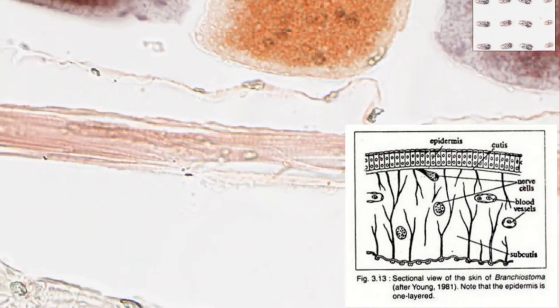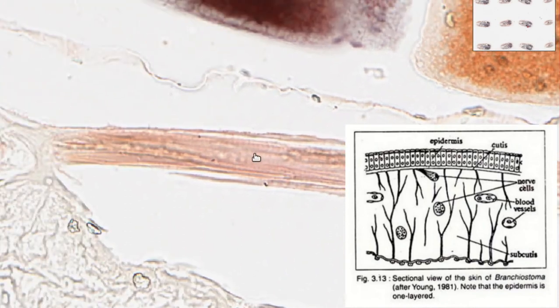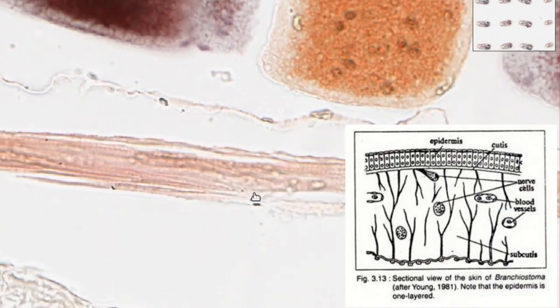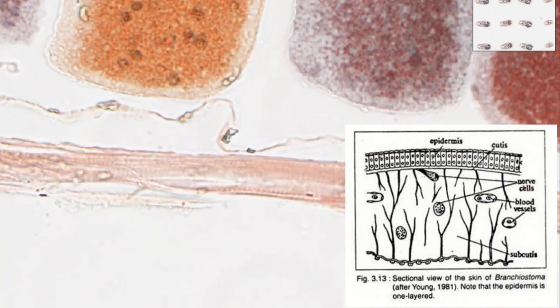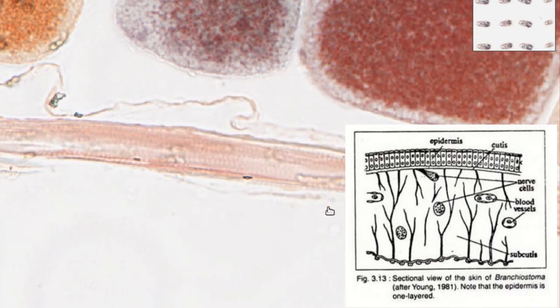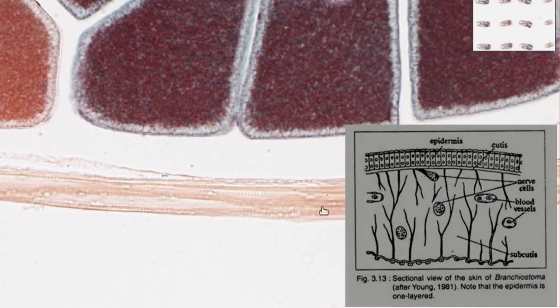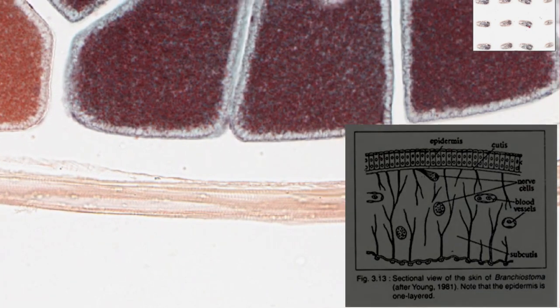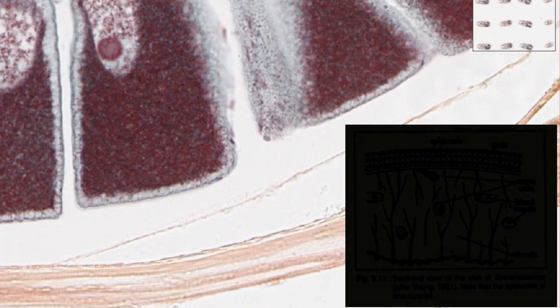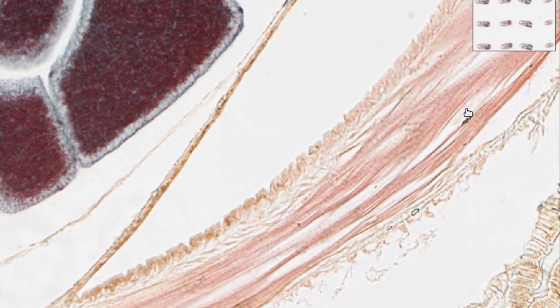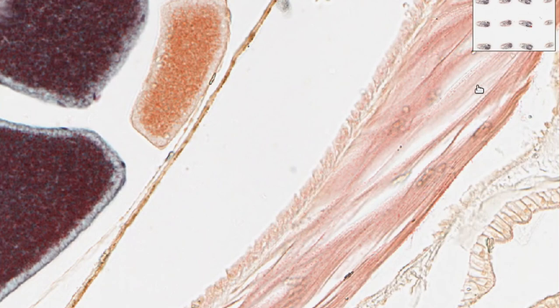So this here looks like a bit of muscle to me. It looks like muscle to me because it's in long fibers. And you can just about make out the striations in it. So these alternating bands of dark and light, which are where the actin and myosin, presumably, I'm not sure if they have the same proteins in branchiostomes compared to higher organisms, where those contractile proteins overlap or don't.